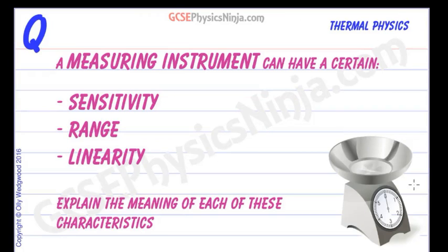Any measuring instrument will have a certain sensitivity, range, and linearity. Explain the meaning of each of these characteristics.